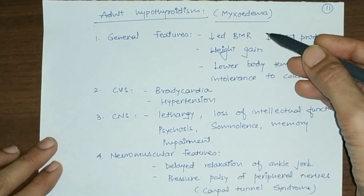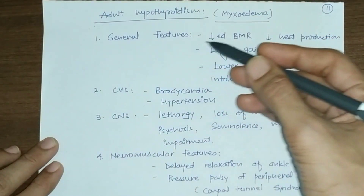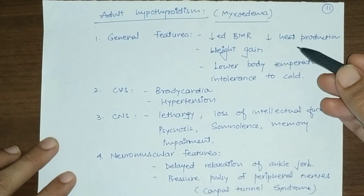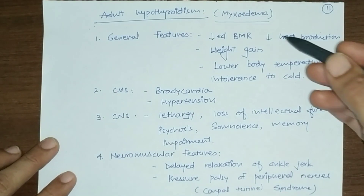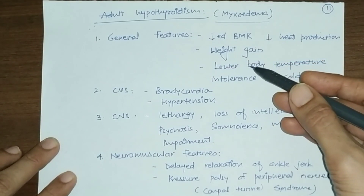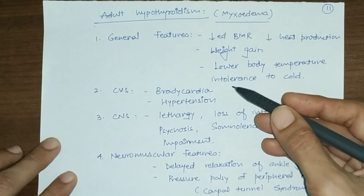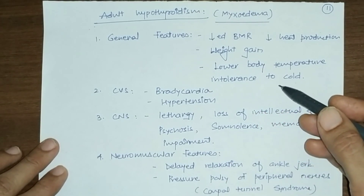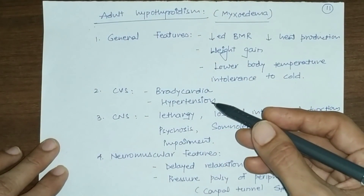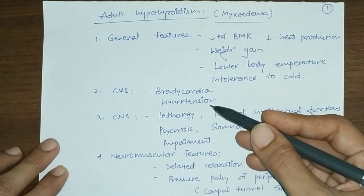Adult hypothyroidism, also known as myxedema: general features include decreased basal metabolic rate, reduced heat production, weight gain, and decreased body temperature causing intolerance to cold. Cardiovascular features include bradycardia and hypertension due to increased serum cholesterol level.